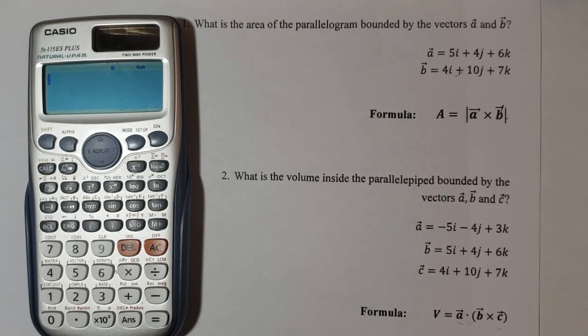Now, let's work through the second question. What is the volume inside the parallelepiped bounded by the vectors a, b, and c? For a we have minus 5i minus 4j plus 3k. For vector b we have 5i plus 4j plus 6k. And for vector c we have 4i plus 10j plus 7k. The way that we can get the volume of the parallelepiped is we're gonna use the formula here. So we're gonna take the vector a and we are going to dot with the cross product of the vectors b and c. Can we do this with the calculator in just one step? I'm sure we can.